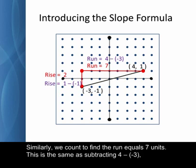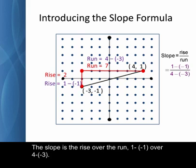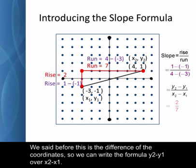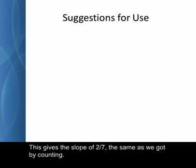Similarly, we count to find the run equals seven units. This is the same as subtracting four minus negative three, the difference of the two x coordinates. Let's put these into the formula now. The slope is the rise over the run, one minus negative one over four minus negative three. We said before that this is the difference of the coordinates. So we can write the formula y2 minus y1 over x2 minus x1. This gives a slope of two sevenths, the same as we got by counting.